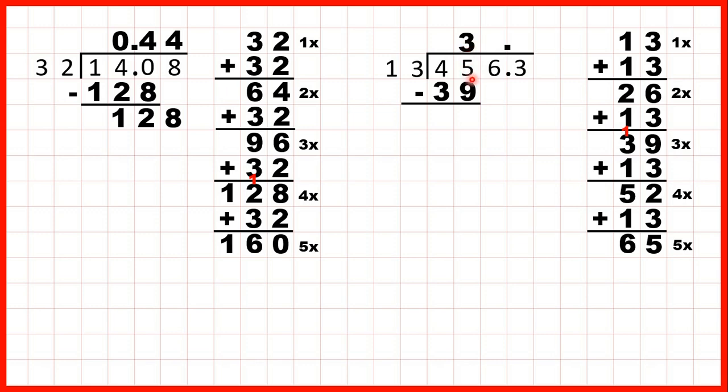Again, it's really important that we write the digits above the last digits that we divided. So because we divided 45 by 13, we need to write the 3 above the 5.